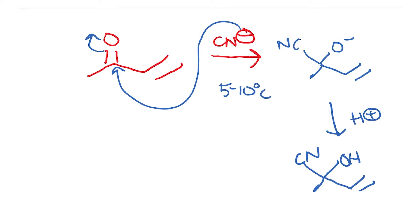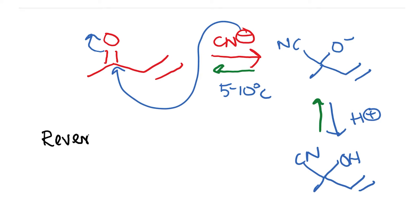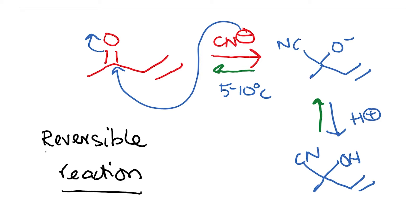We also know that if you take cyanohydrins and dissolve them in just an organic solvent, this can go back — you can get back the starting compound plus cyanide. So the formation of cyanohydrin is a reversible reaction, which means it is going to be in equilibrium. As you add cyanide, you form this product, then work up the reaction and get the cyanohydrin as the product.